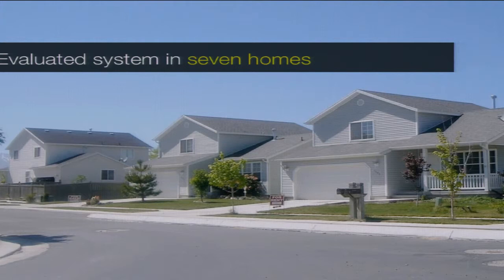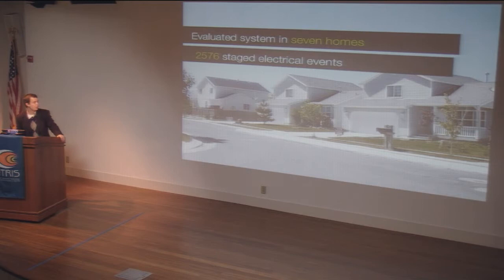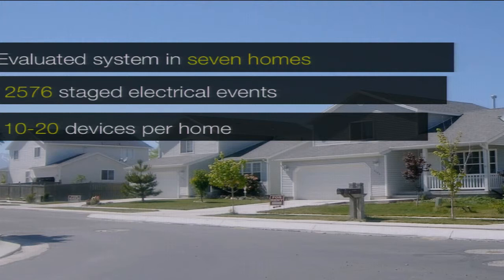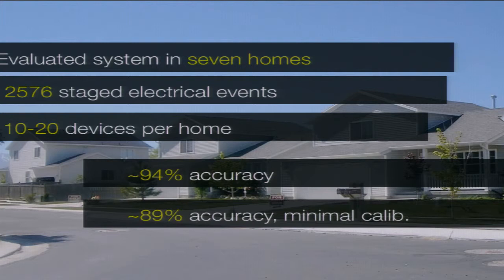For evaluation, my colleague set up staged experiments in seven homes, having homeowners turn on and off their devices as they normally would — for example, turning on their entertainment center as usual. In all, about 2,500 electrical events were collected with 10 to 20 devices per home. Training a per-home classifier with tenfold cross-validation achieves a mean accuracy of about 94%, which surprised us. With minimal calibration — just a few examples per device — accuracy remains right around 90%.